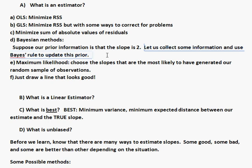So using that prior information that we think it's around 2, let's collect some more information and use Bayes rule to help us update the slope. Maybe we used to think it was 2, but now we've collected some data that makes it more likely that it's 3, for example. So you can use Bayes rule to update your estimate of the slope and then calculate the probability that the slope is in a certain range. That's called a Bayesian method.